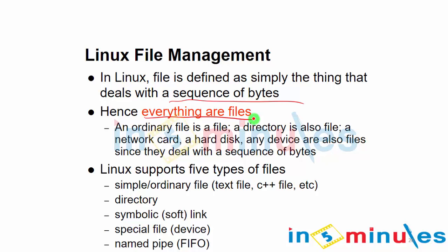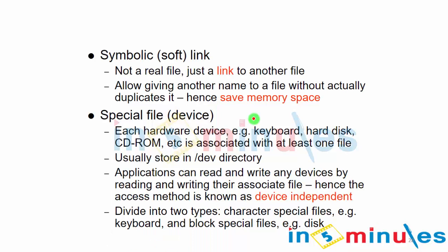A symbolic or soft link is not a real file but just a link to another file — it allows giving another name to a file without actually duplicating it, saving memory. Essentially it is like an alias, similar to how in computer networking an alias maps two names to the same machine and its IP.